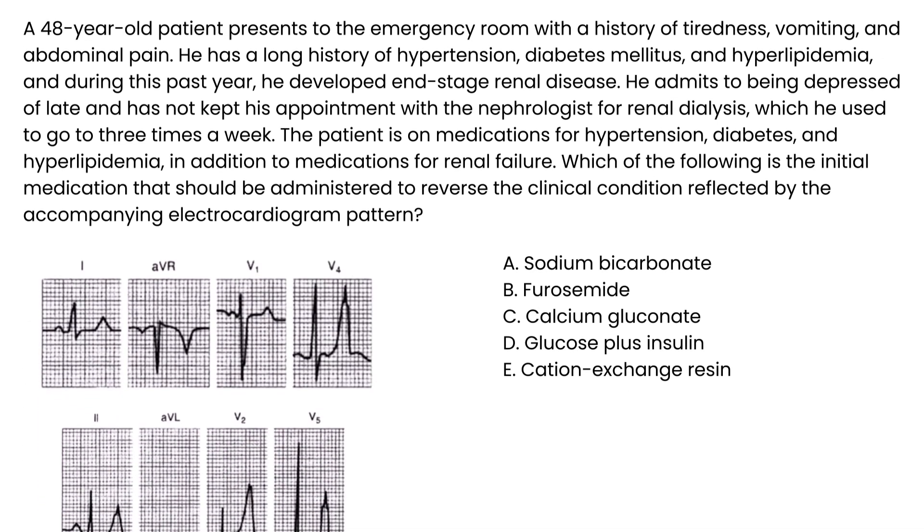And the final one: A 48-year-old patient presents to the emergency department with tiredness, vomiting, and abdominal pain. Long history of hypertension, diabetes, and hyperlipidemia. During this past year he developed end-stage renal disease. He admits to being depressed of late and has not kept his appointment with the nephrologist for dialysis, which he used to go three times a week. Patient is on medications for hypertension, diabetes, and hyperlipidemia in addition to meds for renal failure. Which of the following is the initial medication that should be administered to reverse the clinical condition reflected by the accompanying electrocardiogram pattern?